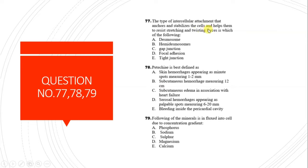Question 77: The type of intracellular attachment that anchors and stabilizes cells, helping them resist stretching and twisting forces, is desmosomes. Hemidesmosomes attach to the basement membrane. Gap junctions are connections between two cells that assist in exchange of ions. Tight junctions are on the apices of epithelial cells. Desmosomes form intracellular junctions and help resist twisting forces.